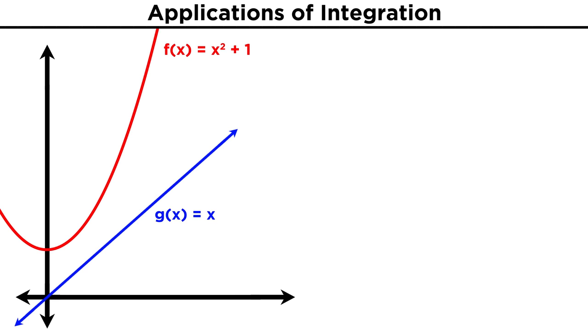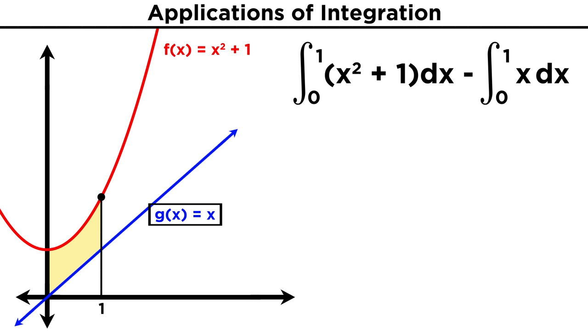Let's try an example. Here are two functions, the first being the parabola x squared plus one, and the other being the line y equals x. Let's find the area in between these curves over the interval from zero to one. Rather intuitively, that will be the integral of x squared plus one, from zero to one, minus the integral of x from zero to one.